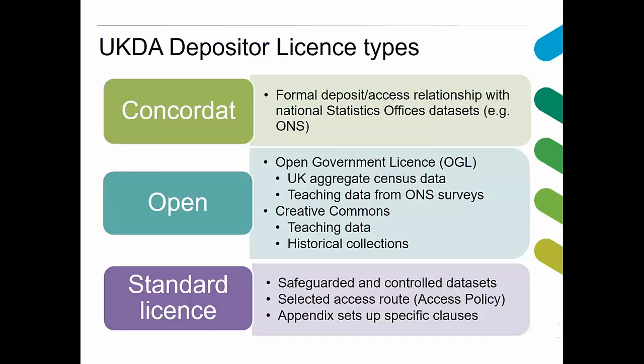We use a variety of licence types here. The grandest is a concordat — a very long document with appendices setting up a formal relationship and contract with a government department, in our case the national statistics offices such as ONS, and those in Scotland and Northern Ireland. There's an annual review of the relationship. When ONS creates a social survey, we get timely access to the data and make it available to users, creating a nice flow of national statistics microdata. We are building concordats with other government departments.